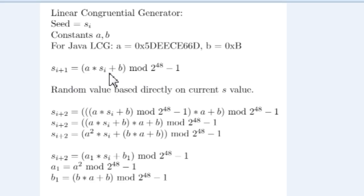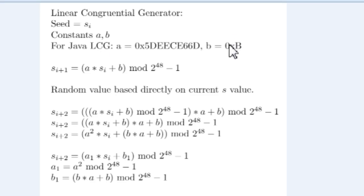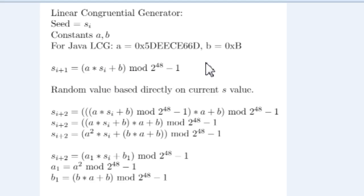When the game needs a random number, the seed value is updated based on its former value plus the multiplication and addition of two constant values. For the Java LCG, it uses these two hexadecimal constants: the current seed s_i is multiplied by A and added to B, then modulated by 2^48 — which is basically a bitwise AND with the lower 48 bits set to one. The random value returned is based on this updated internal seed value.